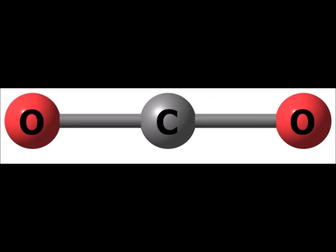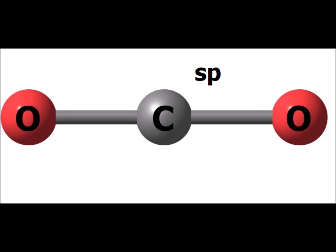Carbon dioxide adopts the linear structure shown, because that is the structure which minimizes the electron-electron repulsions between the two electron domains. We can also use the results of VSEPR theory as a shortcut to determine the hybridization of the central atom. The central carbon has two electron domains, therefore it is SP hybridized. SP has one S and one P — one plus one equals two — and this equals the total number of electron domains for the central carbon atom.